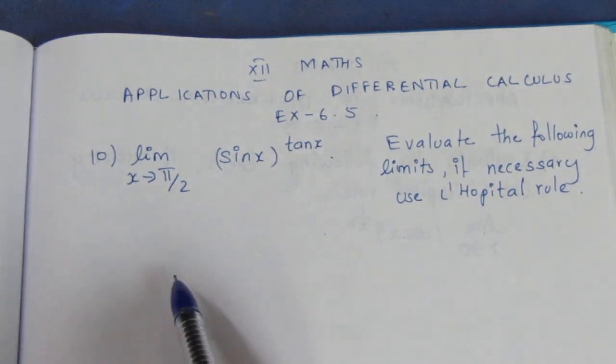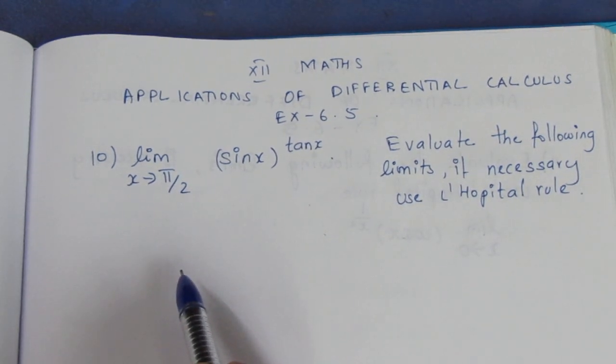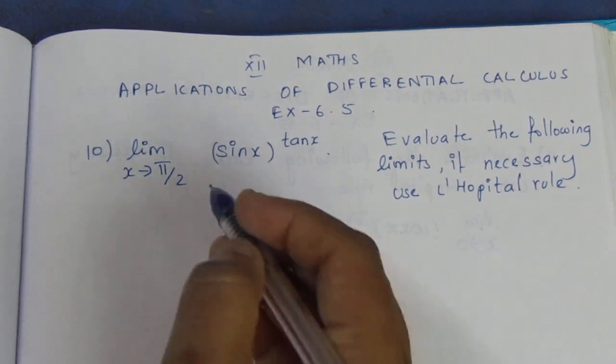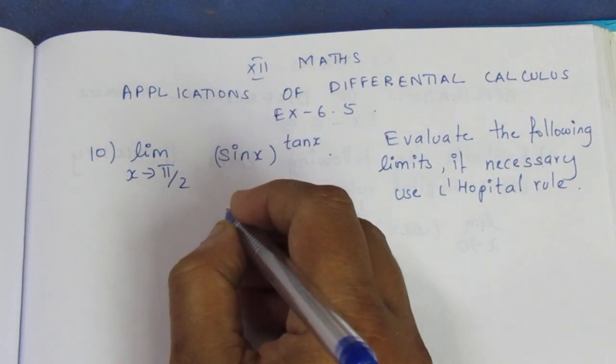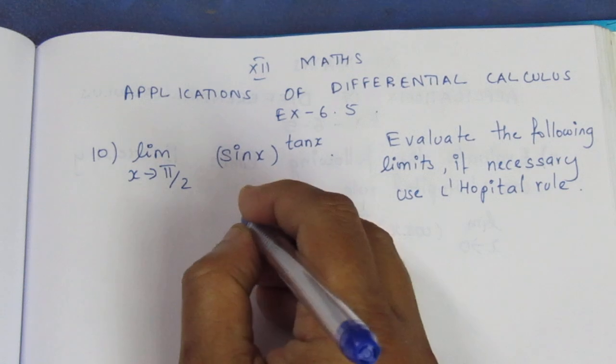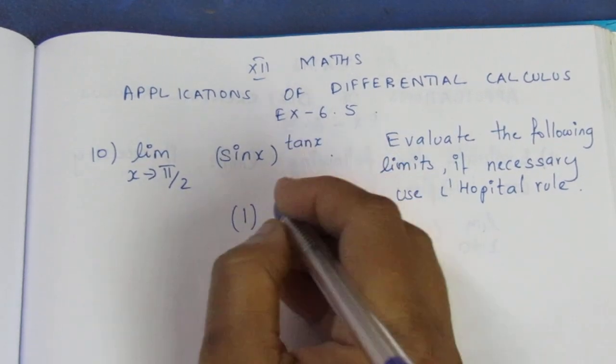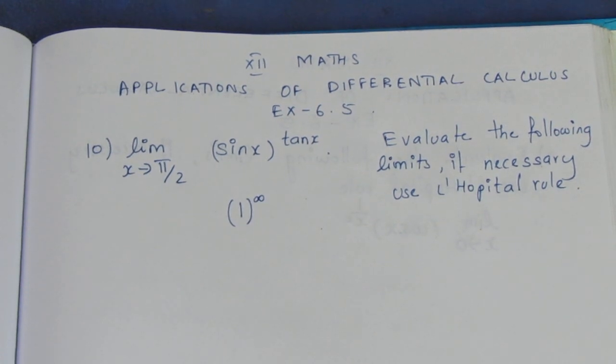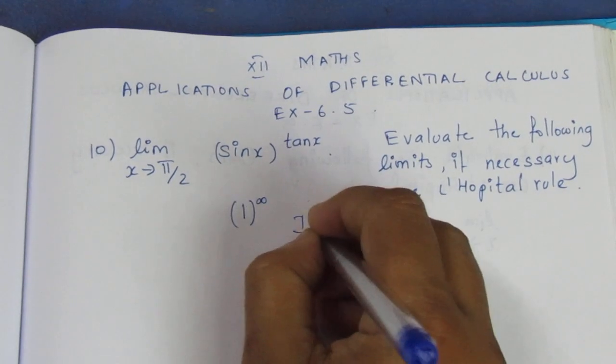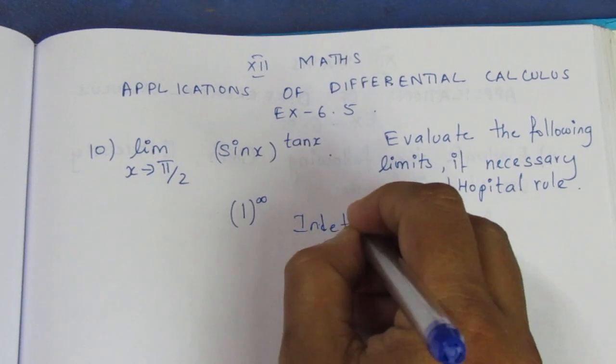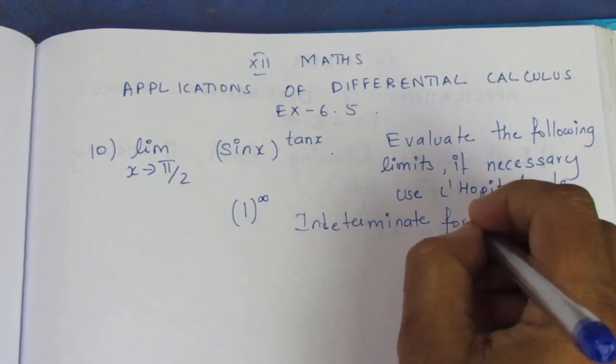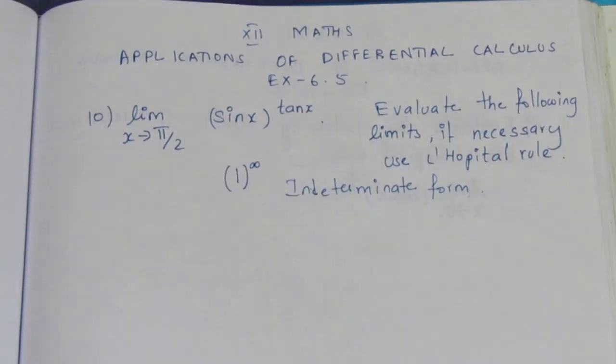So if you substitute the limit value, you get an indeterminate form. If you substitute π/2, sin π/2 equals 1, tan π/2 equals infinity, so 1 to the power infinity. This is an indeterminate form.